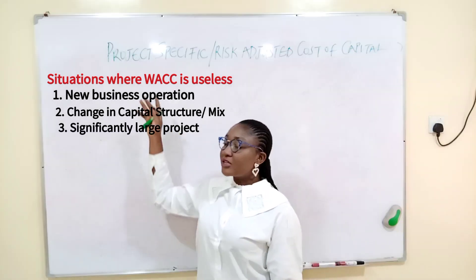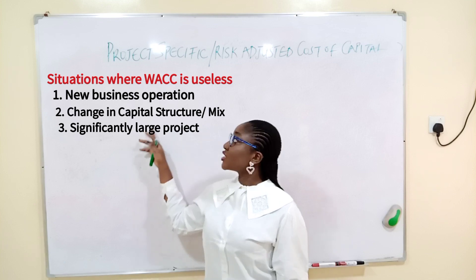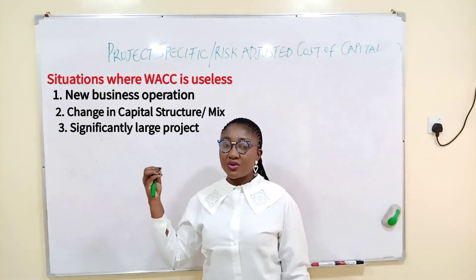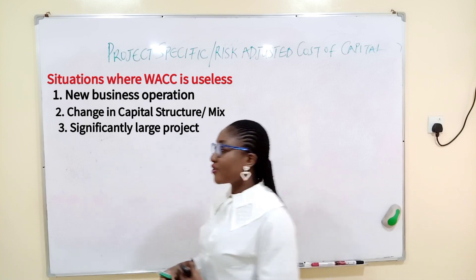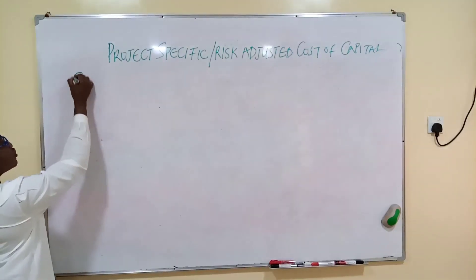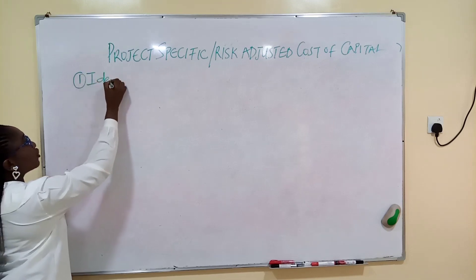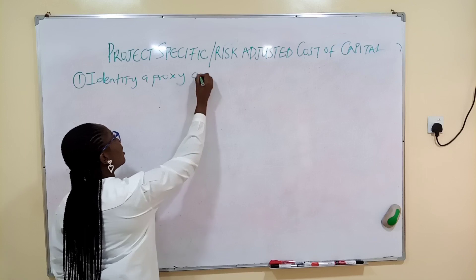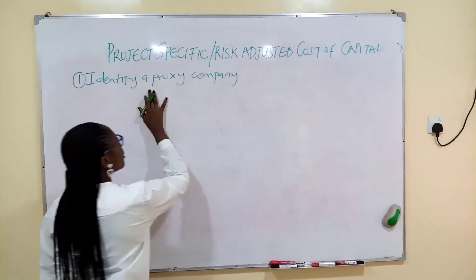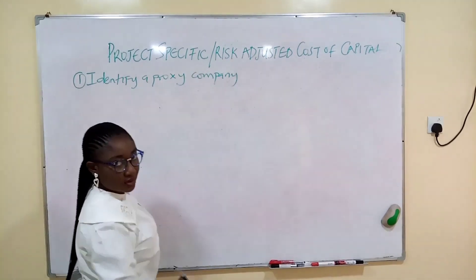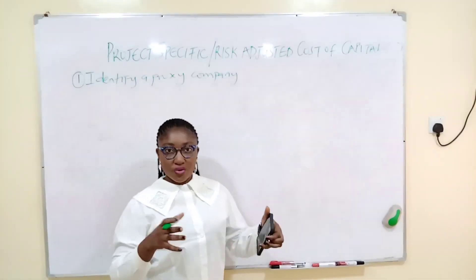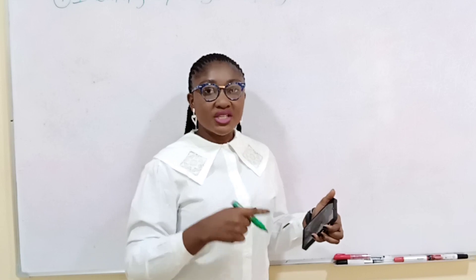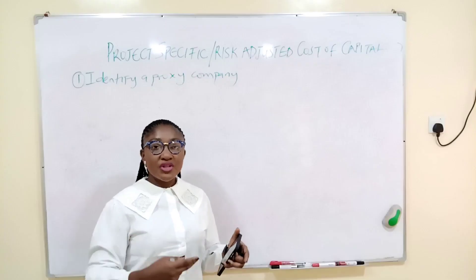Having known that, I'm going to give you the steps and we'll solve questions. The steps are for estimating the project-specific cost of capital, or risk-adjusted cost of capital. The first thing is to identify a proxy company. The proxy company is an identical company — identical to the company of concern in the question.